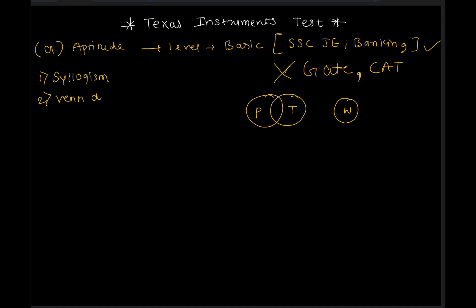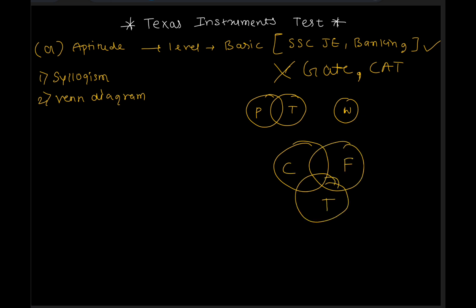You can expect one or two questions from each topic. Venn diagram is also important. The type of question you'll get involves scenarios like: in a class, some study, some play cricket, some play football, some play tennis — if 10 play this, 15 play this, 20 play this, how many play both? There will definitely be at least one question of this type.